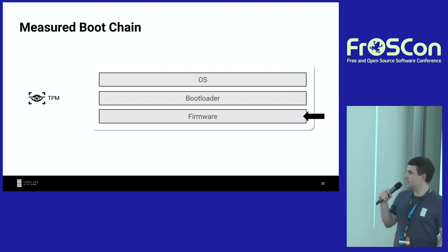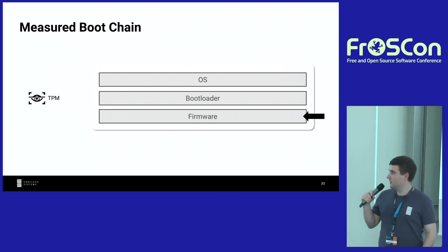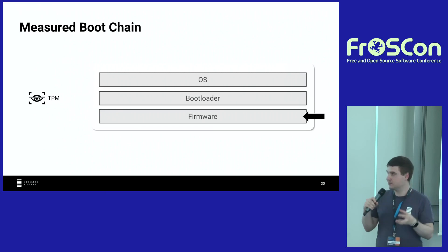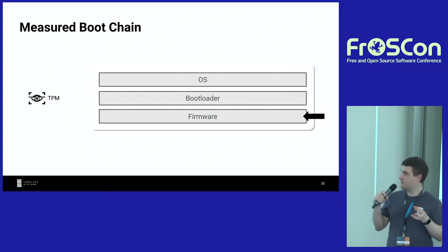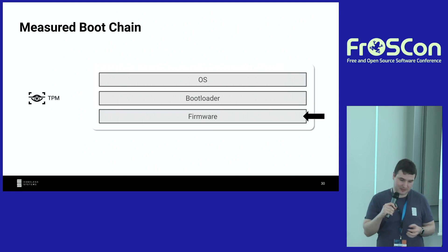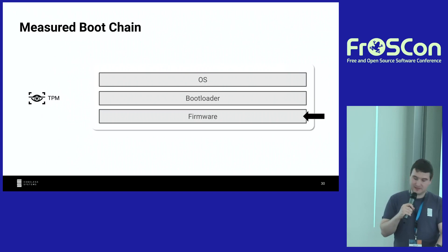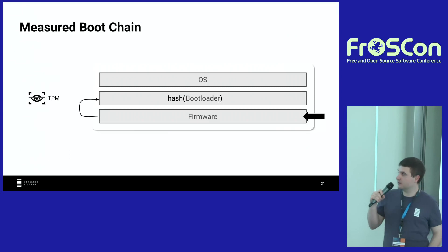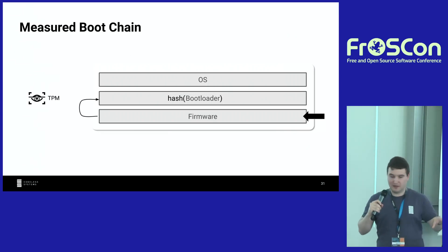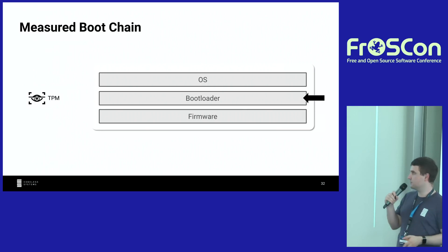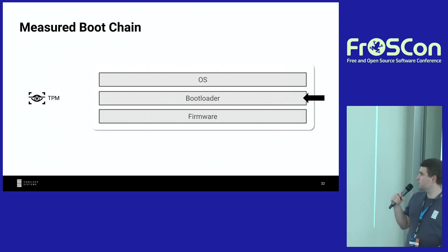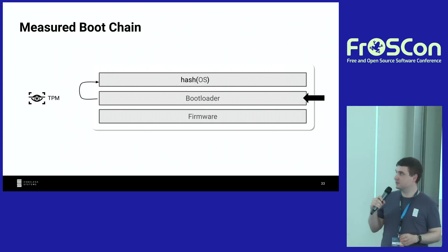This is the measured boot chain on a normal computer. You have firmware — let's assume it's immutable, stored in ROM — which first has execution. It loads the next stage, the bootloader, creates a hash over it, extends this into a PCR, and only then starts executing the bootloader. The bootloader does the same: it loads the next component into memory, creates a hash, and measures it into the TPM.